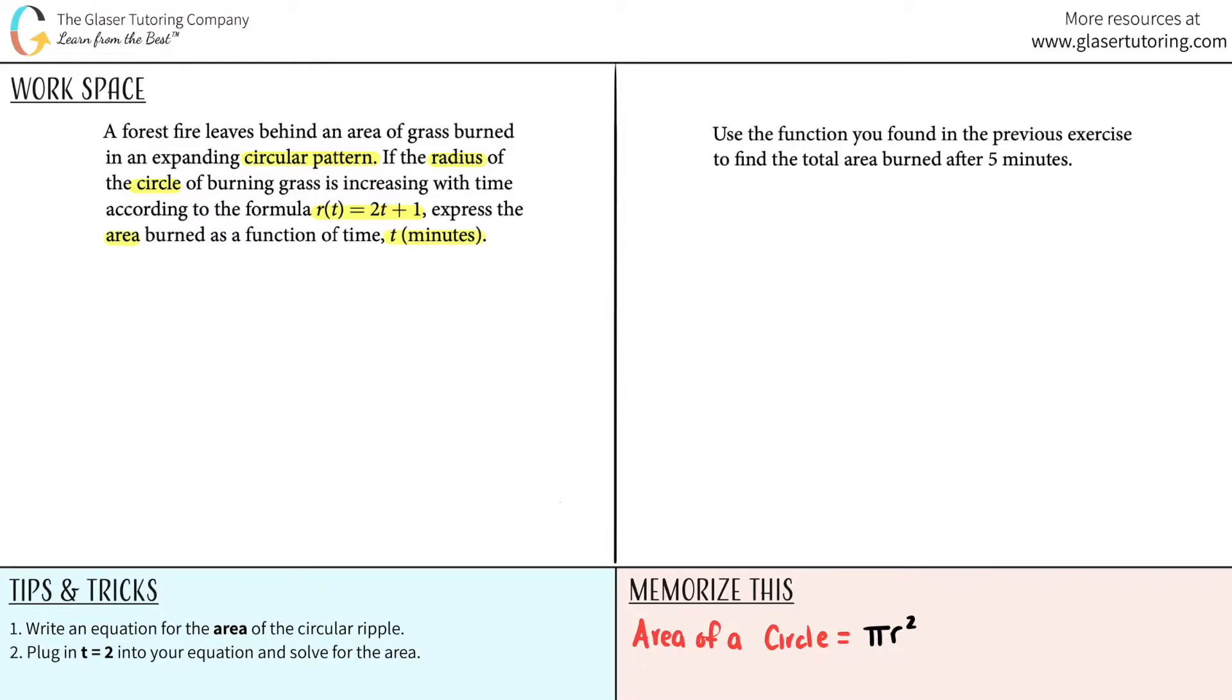Okay, so function time. The only way that this question is going to work is if you guys know what the area of a circle is. They gave you hints as to what area formula you need to know. So I wrote it down for you guys over here. The area of a circle always equals πr².